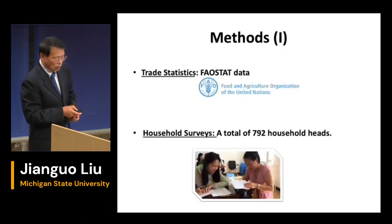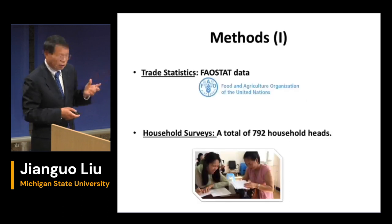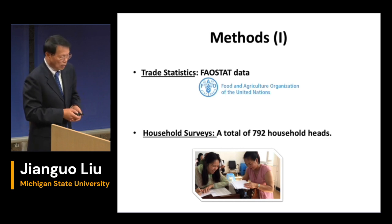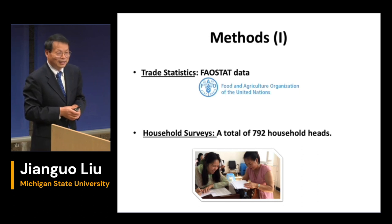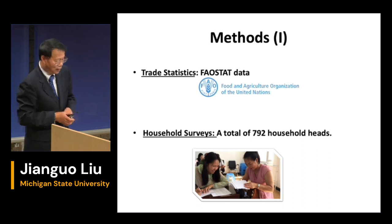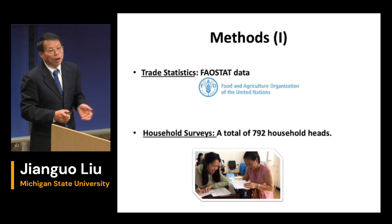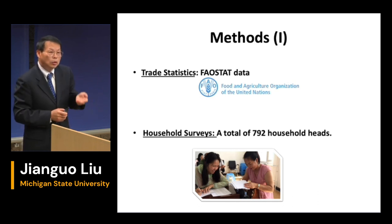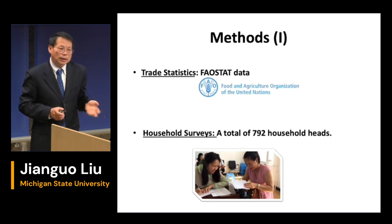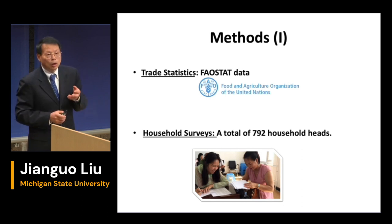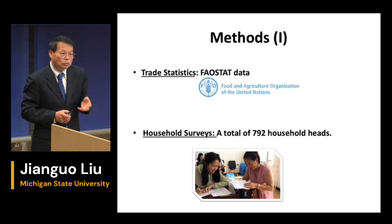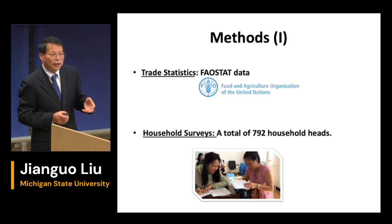We use a set of methods and statistics. Trade data comes from the United Nations FAO — the Food and Agricultural Organization. We also conducted household surveys with farmers, addressing questions about how farmers respond to trade issues, what their agricultural practices are, whether they burn crop residue, how often, how much, and whether the soybean trade affects their land use decisions.